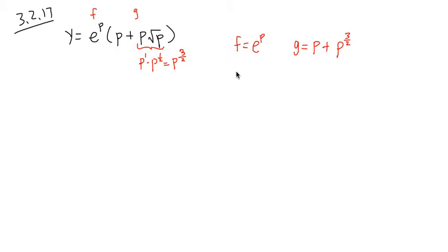So for this, the derivative of e to the p is just e to the p. The p, once again, is just like the x.